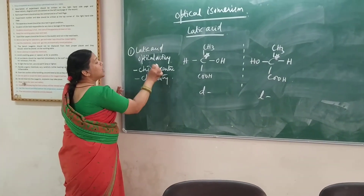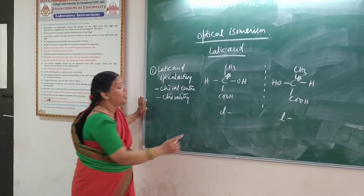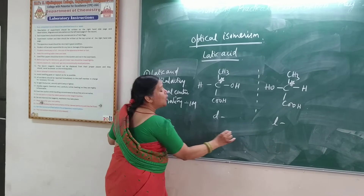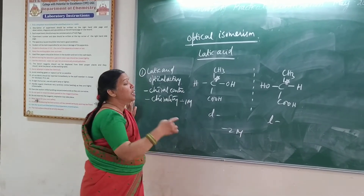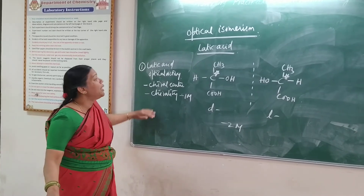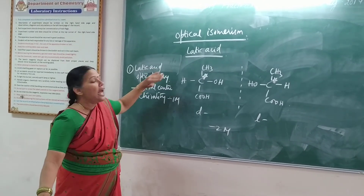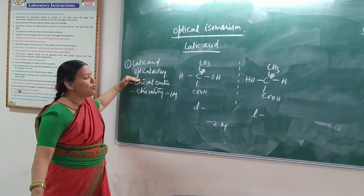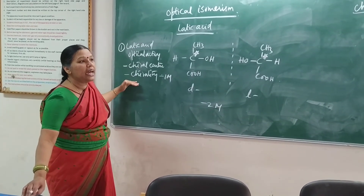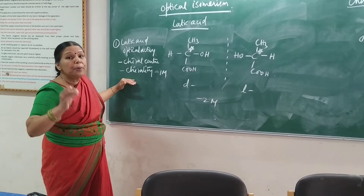Therefore lactic acid is optically active. If you write the structure you get two marks, and the explanation gets one more mark. They will ask: explain the optical activity of lactic acid. Lactic acid is an optically active isomer because it has a chiral centre and chirality. Chirality is the non-superimposable mirror images.